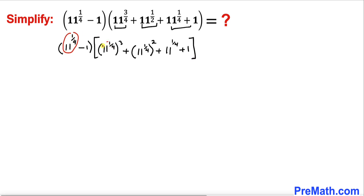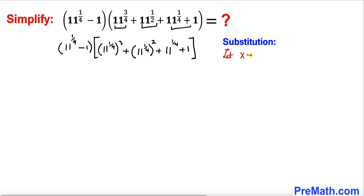We can see that 11 power 1 over 4 is common across the board, so we'll make a substitution to make our job easier. Let x equal 11 power 1 over 4. Our expression becomes: x minus 1, times x cubed plus x squared plus x plus 1.